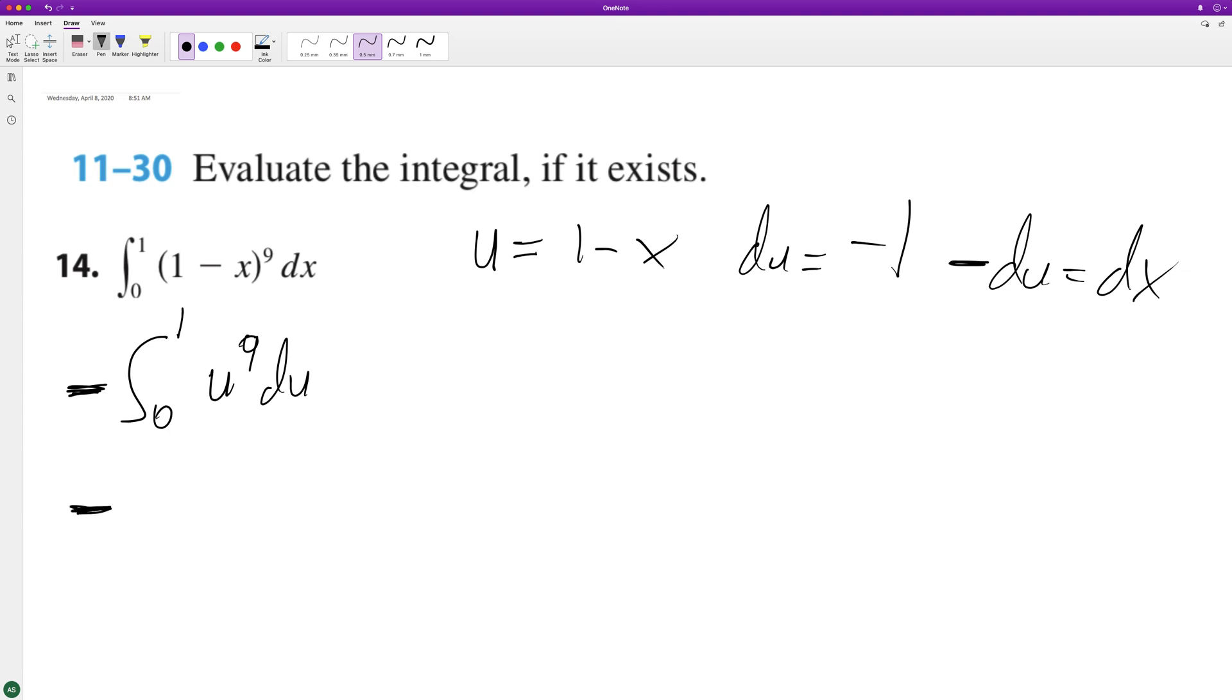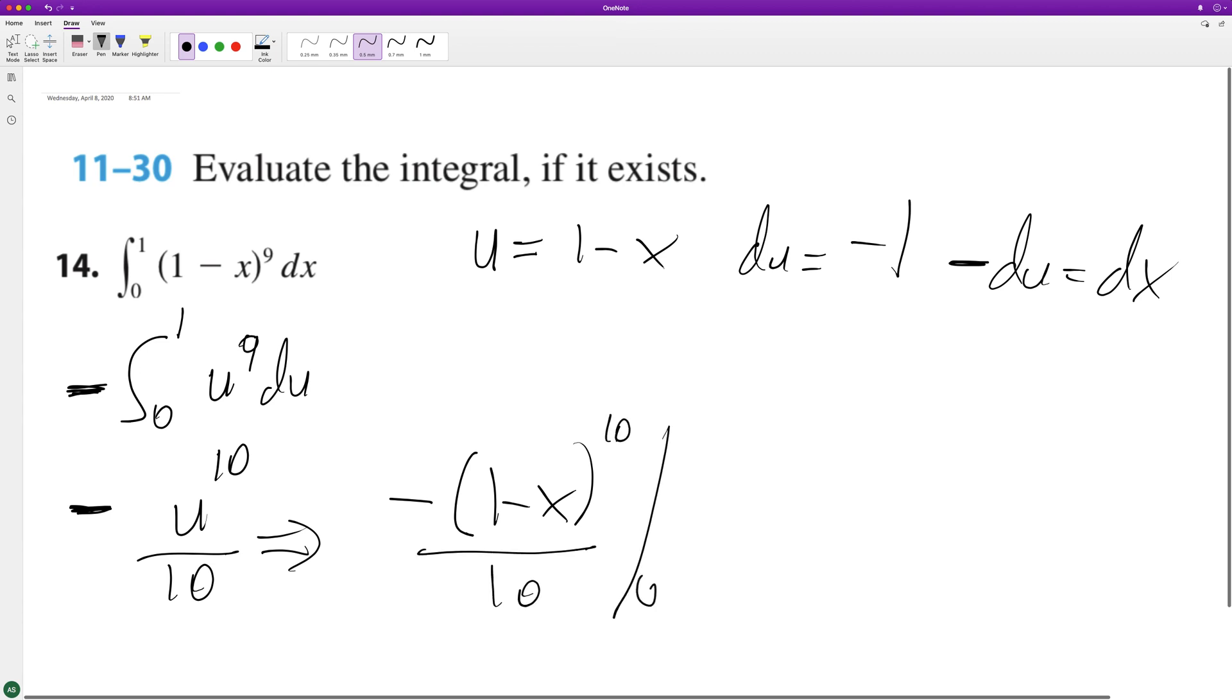And when we integrate this, we raise this by one and we get this divided by 10. And then we can just go ahead and substitute back in. So we get negative one minus X raised to the 10th over 10 from zero to one.